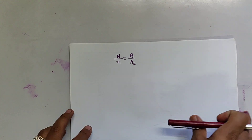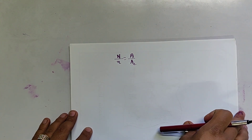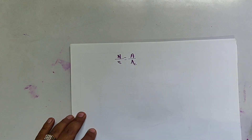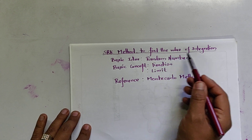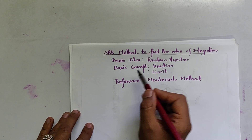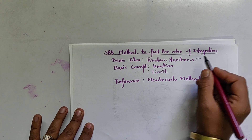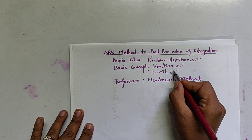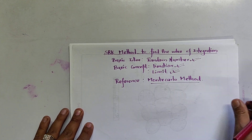I will be using my own method to calculate the value of integration, and I have given it the name SRK method. The basic idea is we have to generate random numbers and use function limits, and the main difference from the Monte Carlo method will be clear as we proceed.